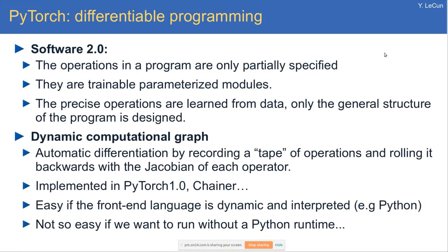This led people to think that perhaps the new way of programming — what some call software 2.0 — is to write a program that specifies the architecture of a neural net, potentially with conditionals and loops, producing a net whose architecture is data-dependent. Each instruction of the program is a differentiable module controlled by parameters, and the overall function of the system isn't completely determined until you train it on data. These dynamic neural nets are handled at a deep level by frameworks like PyTorch and Chainer.